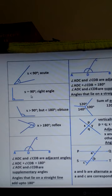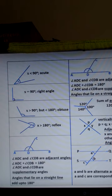Number two is a right angle. These two lines — this one here is perpendicular to this one here, so they form a right angle. A right angle X is equal to 90 degrees.